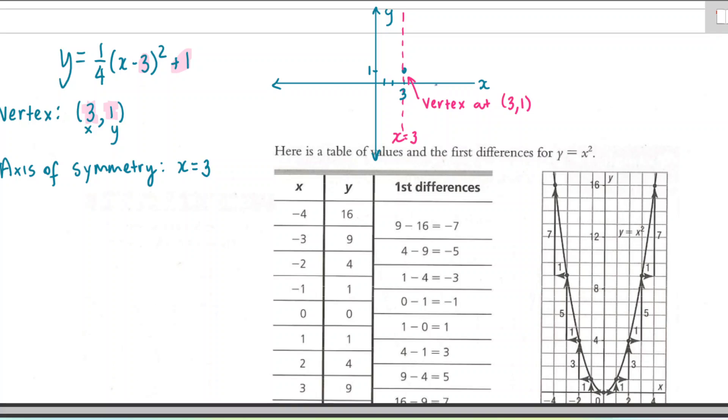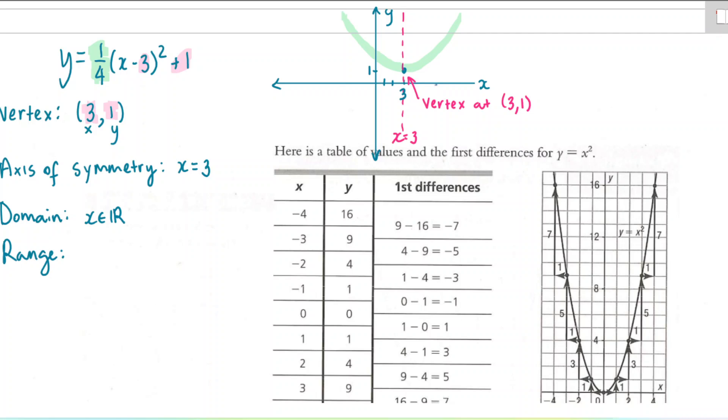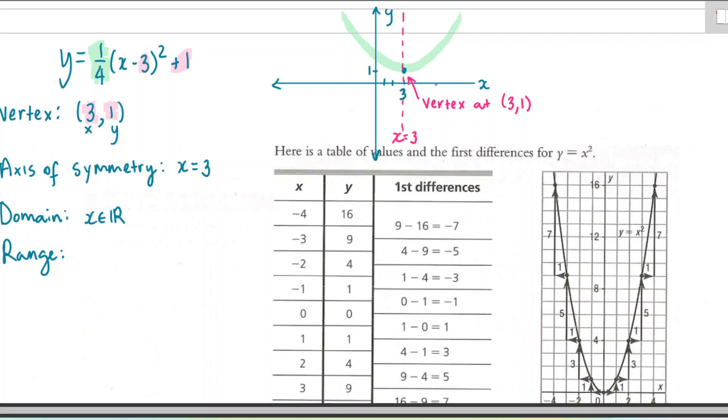For our domain and range, so the domain is going to be all real numbers. It's always all real numbers unless you have, like, a word problem that you're doing. Our range, let's look at the direction this parabola is facing. So because the a value here is 1 fourth, it's a positive number, that means my parabola will be facing upwards. So I will have an upwards-facing parabola I'm going to draw in. It's a pretty shallow parabola because 1 fourth is pretty close to 0, it's less than 1, so it is compressed a little bit. So my range is going to be all the y values are 1 or greater than 1. So we say y is greater than or equal to 1 for the entire graph. And we saw that from looking at that a value and the vertex.